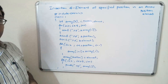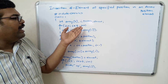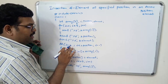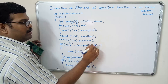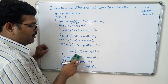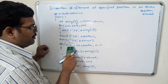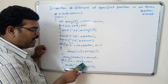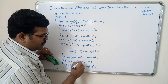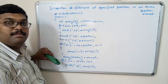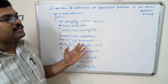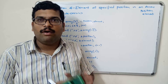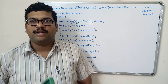This ends the program. We can also take the size as n; then we replace 5 with n, writing n-1 for the loop, and n+1 for the display loop condition. So like this we can insert an element into an array at a particular position. This is one operation that can be done on one-dimensional arrays.